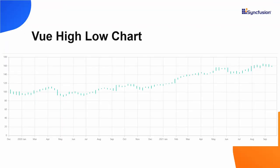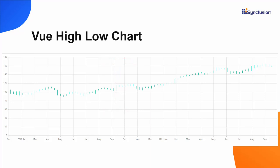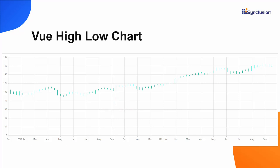Next, I will show you how to add a high-low chart to the Vue app. With a high-low series chart, you can easily see the price variation in a stock, with its high and low price values shown here. The top end of this vertical line indicates the highest trading price, and the bottom point indicates the lowest trading price of the stock.